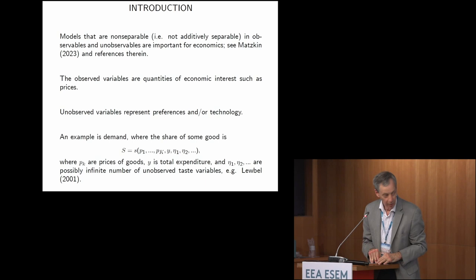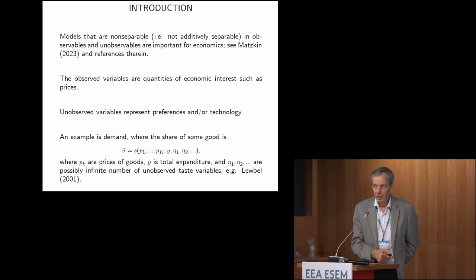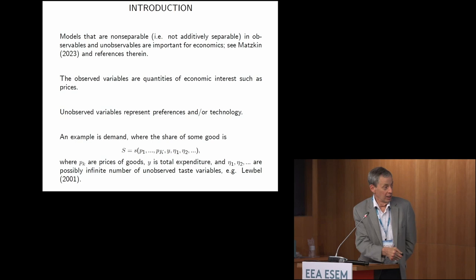Models that are non-separable are really important in economics — fundamental to thinking about economic modeling when there's unobserved heterogeneity. The structure of not being additively separable in unobserved and observed things is really important. You often want to let the functions that give you policy effects depend on heterogeneity in general ways. The observed variables are typically quantities of interest; the unobserved variables represent preferences or technology. A great example is demand.